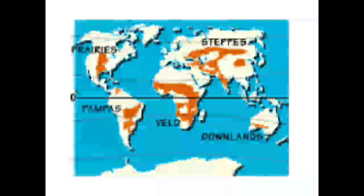You can see on the map: in North America there are Prairies, in South America there are Pampas, in South Africa there is Veld, in Africa there is Savanna, in Europe there are Steppes, and in Australia there are Downs. Please remember all of these.